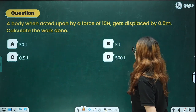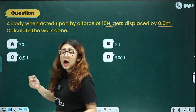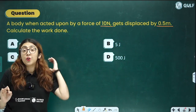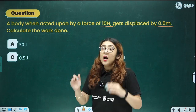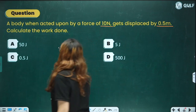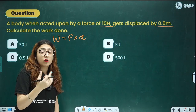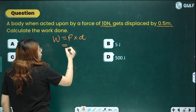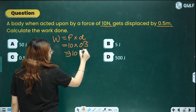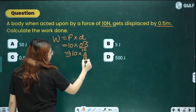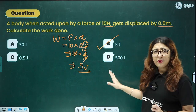A body, when acted upon by a force of 10 Newton, gets displaced by 0.5 meter. Calculate the work done. Work done = Force × Displacement = 10 × 0.5 = 5 Joule. The answer is 5 Joule — a pretty easy question.